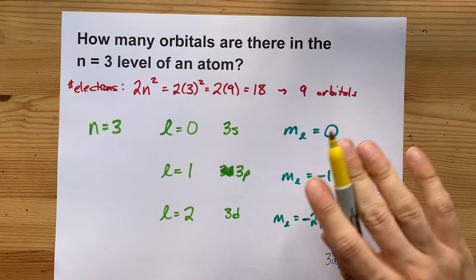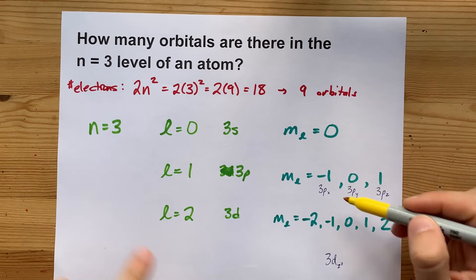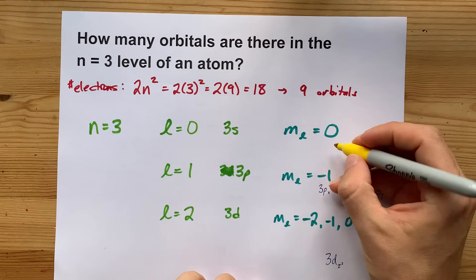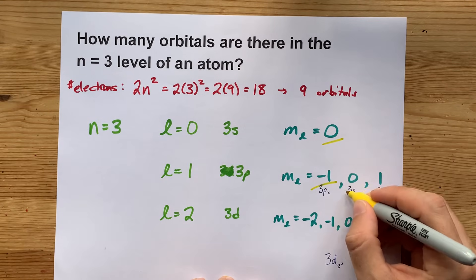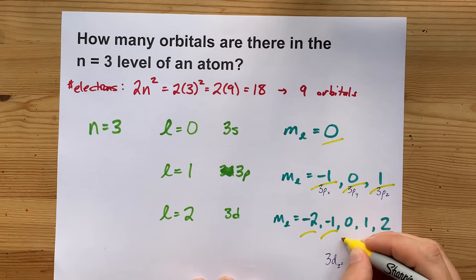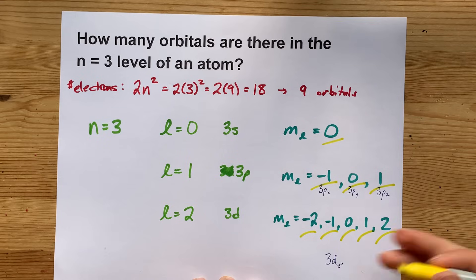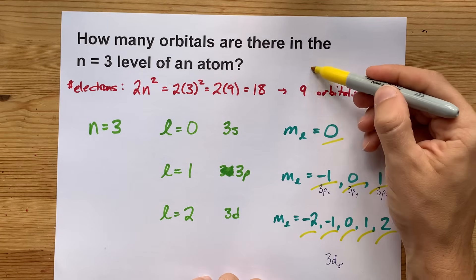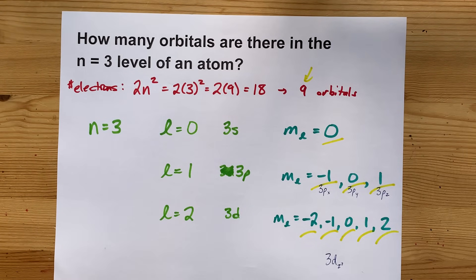But I want to point out to you how many possible MLs could we list for all of N equals 3? 1, 2, 3, 4, 5, 6, 7, 8, 9. Just like the shortcut told us. Beautiful.